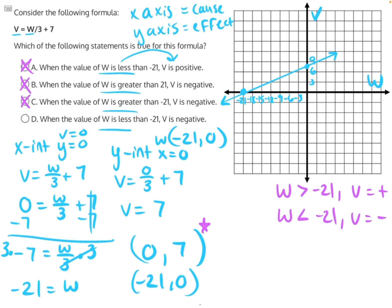And finally, D, when the value of w is less than negative 21, v is negative. This is correct because when we go to the left-hand side of w equals negative 21, we get v-values that are below the x-axis, making them negative and making D our correct answer.